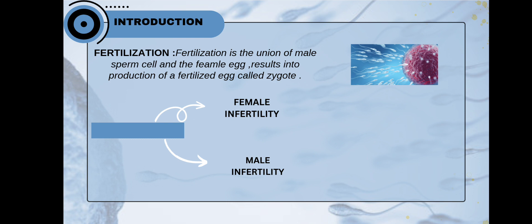Behind reproduction there is a process called fertilization which results in reproduction. Fertilization is the union of sperm cell and the female egg resulting into the production of a fertilized egg called zygote. But this doesn't seem simple as it is. There are many factors which result into infertilization. Here we studied about two factors: first the female infertility, and the second one is male infertility. I'm going to study about male infertility and the factors behind that.